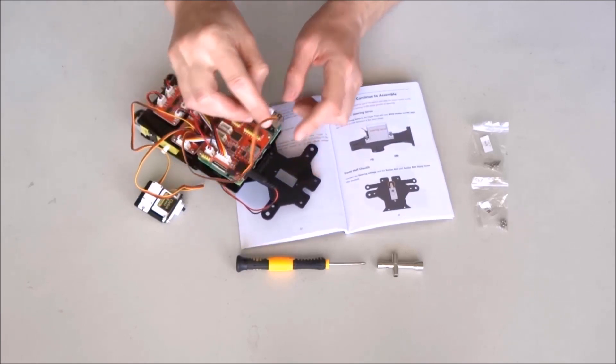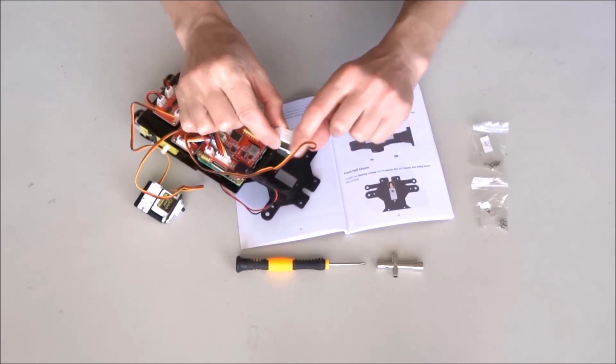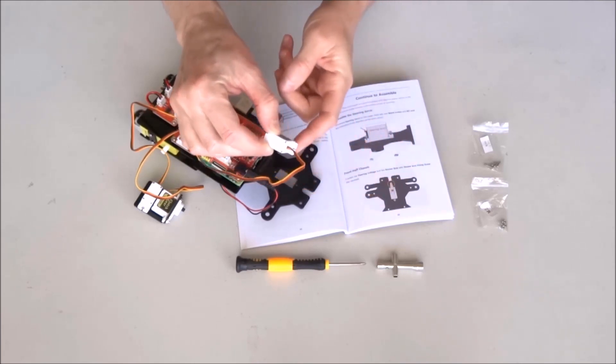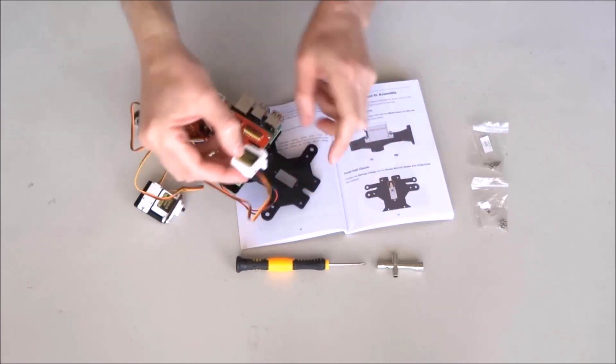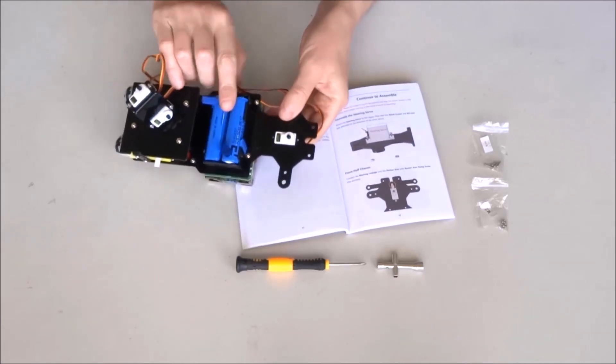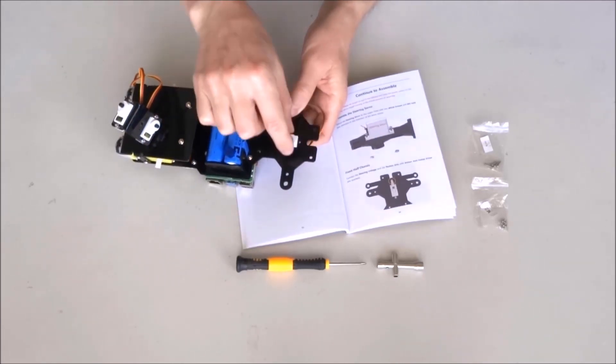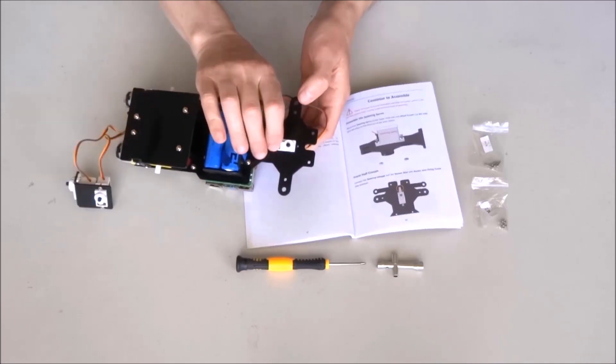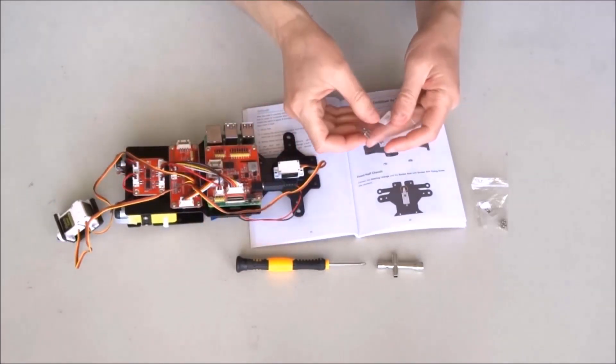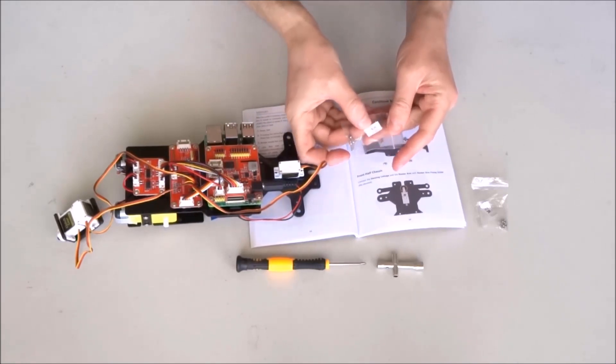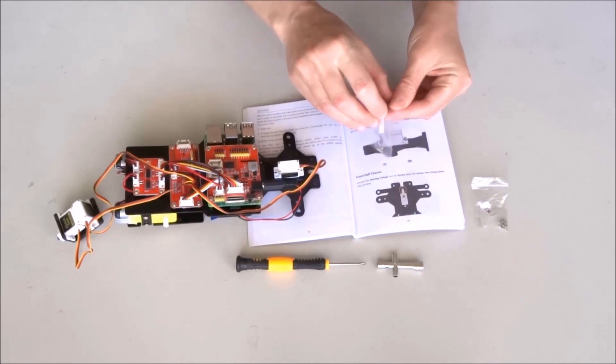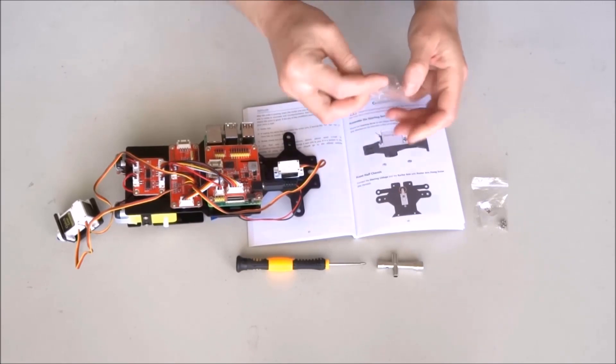The servo has to be installed with the cable pointing toward the front of the robot and the shaft also located closer to the front of the robot like this. For the installation I will use two M2 by 8 bolts, I'll take two of them from the back.